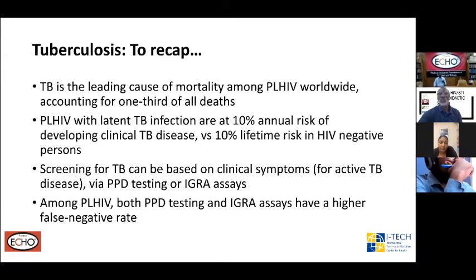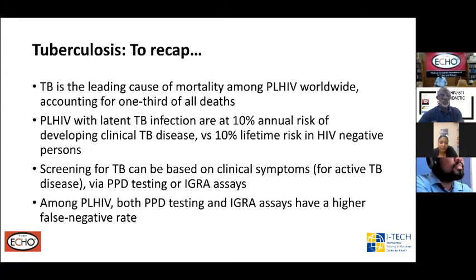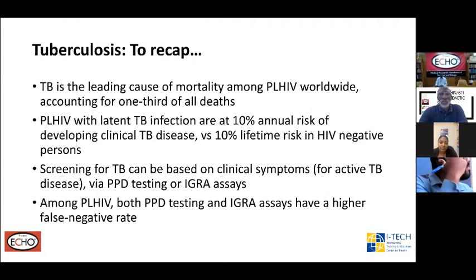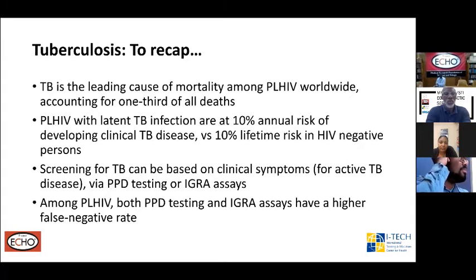To recap the last presentation: tuberculosis remains the leading cause of mortality among persons with HIV worldwide, accounting for one-third of all HIV-related deaths. In persons with HIV with latent TB infections, there is a 10% annual risk of progressing to clinical TB disease, versus a 10% lifetime risk in HIV-negative persons. Both PPD testing and interferon gamma-release assays have a higher false-negative rate in persons with HIV, making them unreliable for ruling out the diagnosis.